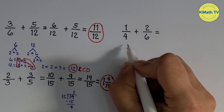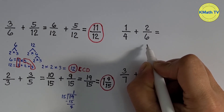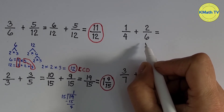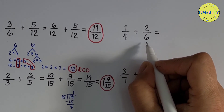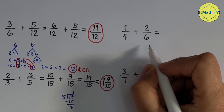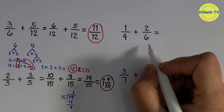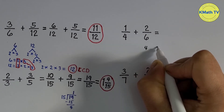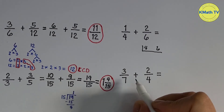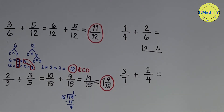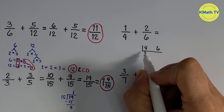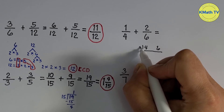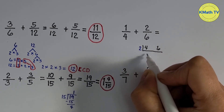Next, let's add one-fourth plus two-sixths. The denominators are 4 and 6 — they are not the same, so we cannot add immediately; we need to get the LCD first. In this problem, let's use continuous division to find the LCD. Let's write the denominators 4 and 6, and divide them by their common prime factor.